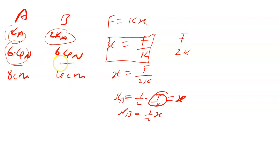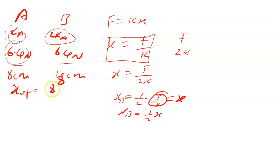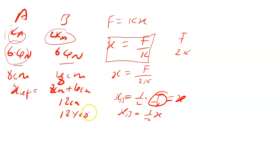The total extension is equal to 8 centimeters plus 4 centimeters, which is 12 centimeters. This is 12 times 10 to the negative 2 meters, or 0.12 meters as the total extension.